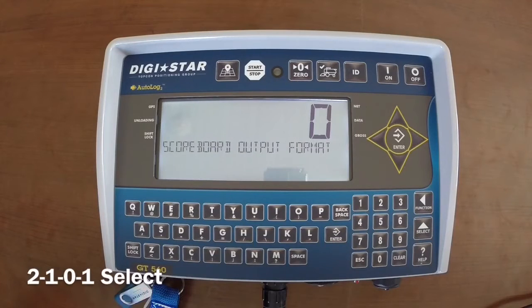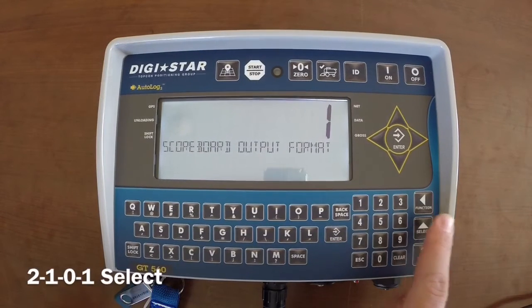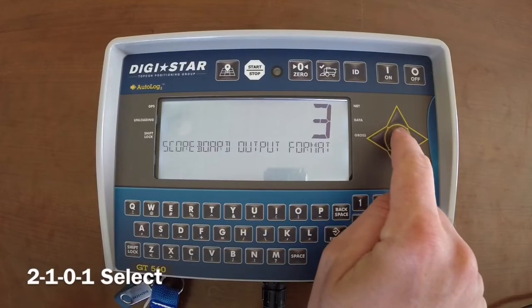Score M will display. Press the select button to change it to 3, then press enter.